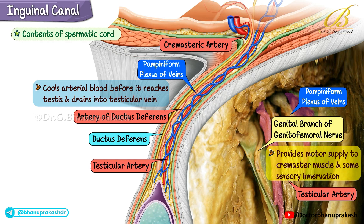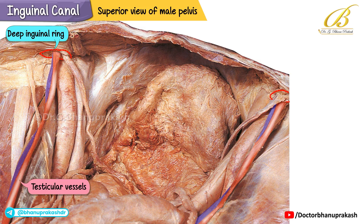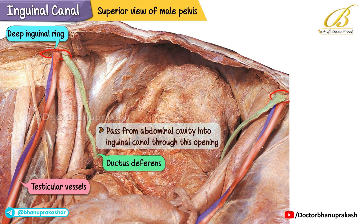Also within the spermatic cord is the genital branch of the genitofemoral nerve, which provides motor supply to the cremaster muscle and some sensory innervation. Now let's look at the superior view of the male pelvis to understand how structures enter the deep inguinal ring. In this image you can clearly see the testicular vessels and the ductus deferens approaching the deep inguinal ring, passing from the abdominal cavity into the inguinal canal through this opening.